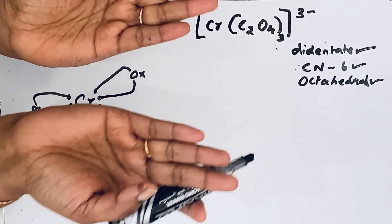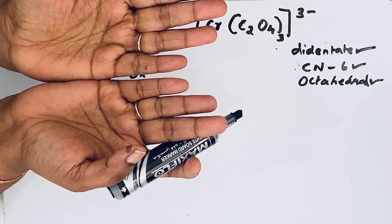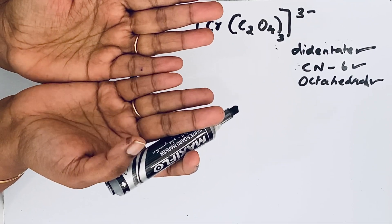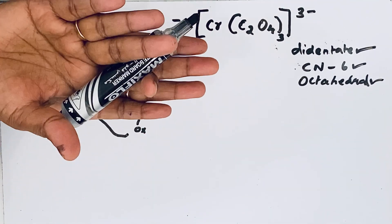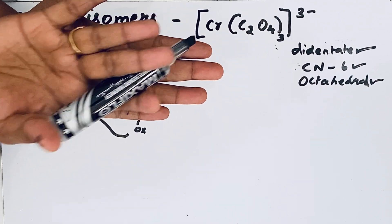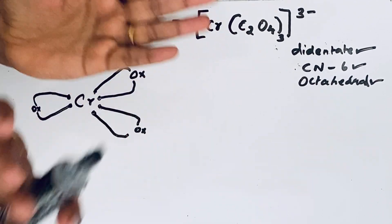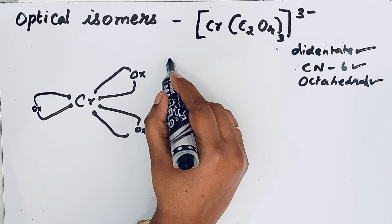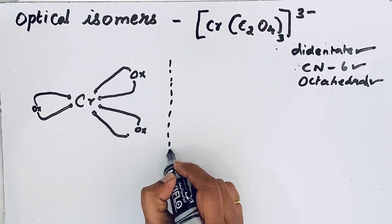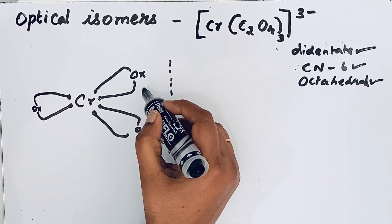So the same way, now if you see, if you are keeping them here, the little fingers are near to each other. But if you are keeping one on the above, then they are not superimposable. The same way, for mirror images, both isomers should be the same.